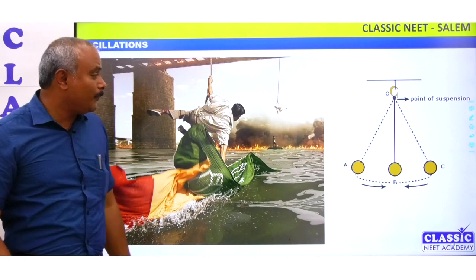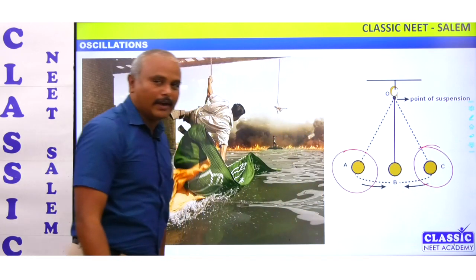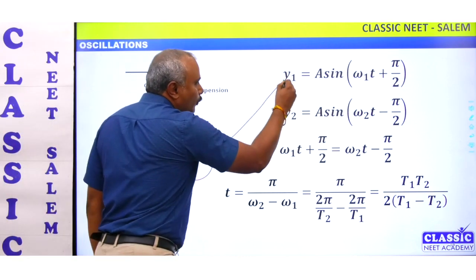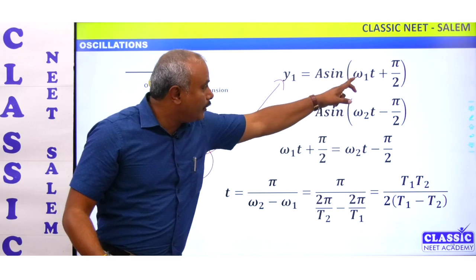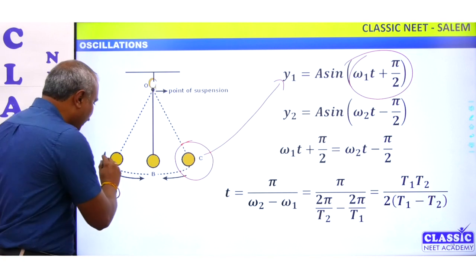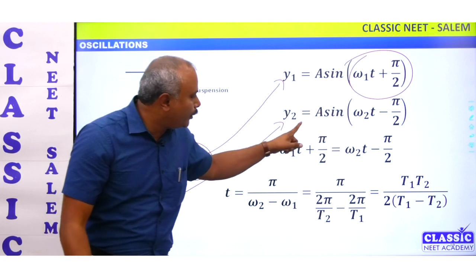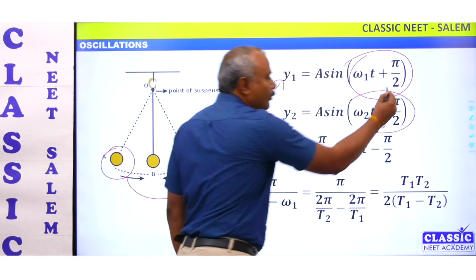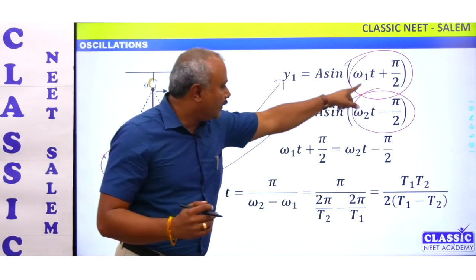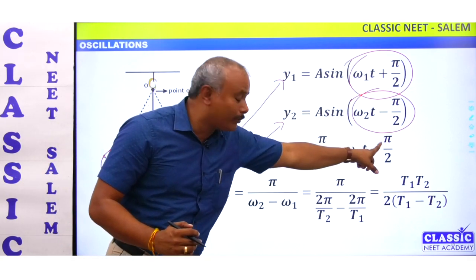We have two pendulums: Ramcharan and Junior NTR. They each have one equation. y₁ = A sin(ω₁t + π/2) — this is the phase of the first pendulum. The second pendulum: y₂ = A sin(ω₂t − π/2). To find the same phase, we equate: ω₁t + π/2 = ω₂t + π/2.